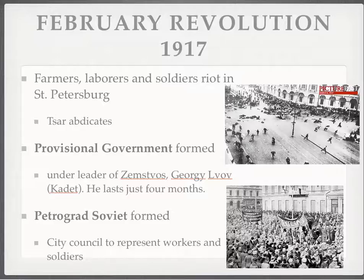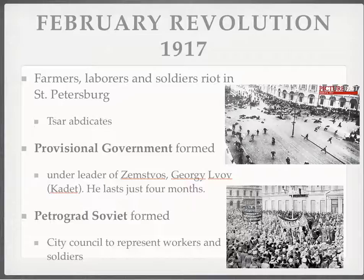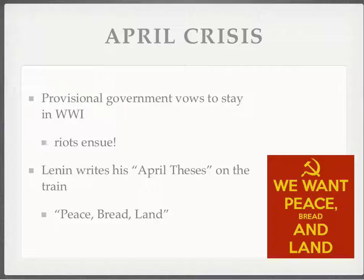Nicholas abdicates. He tries to pass power to a sibling, it doesn't work, and Russia is without a monarch for the first time — the monarchy is abolished. A couple of governments form. The Provisional Government is created — the national government of Russia under the leader of the zemstvos, Georgi Lvov, a cadet or constitutional democrat. He lasts four months, which shows you how tough it was. The Petrograd Soviet is also formed — St. Petersburg changes its name to Petrograd — and the Soviets are created to look out for the workers and soldiers who were instrumental in this revolution, setting up a controversy between these two factions.